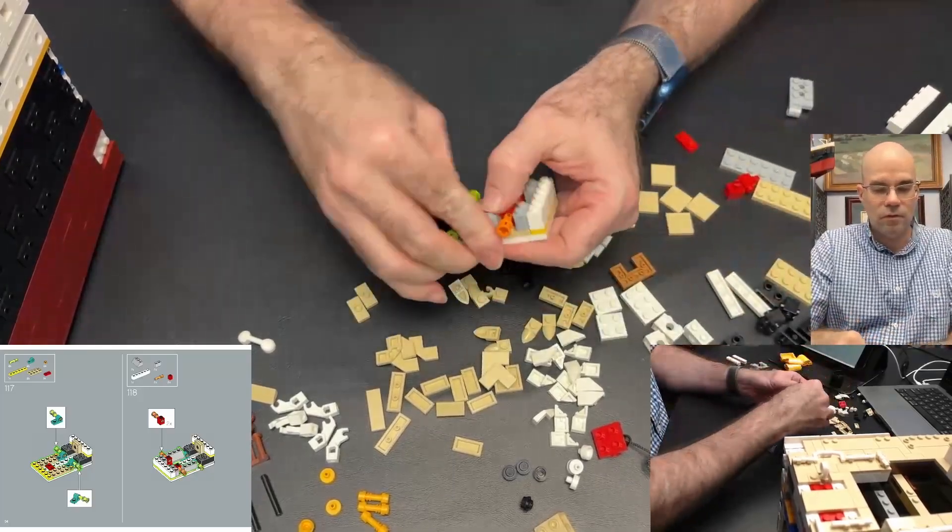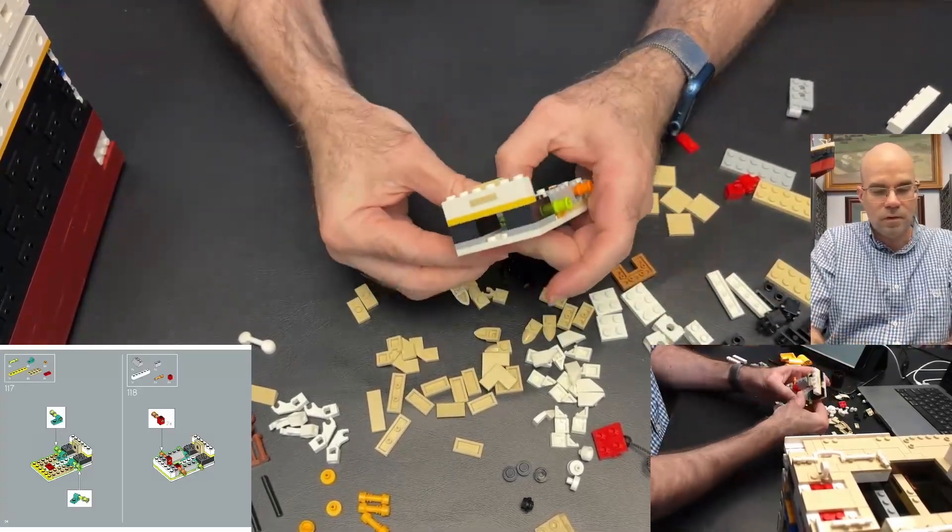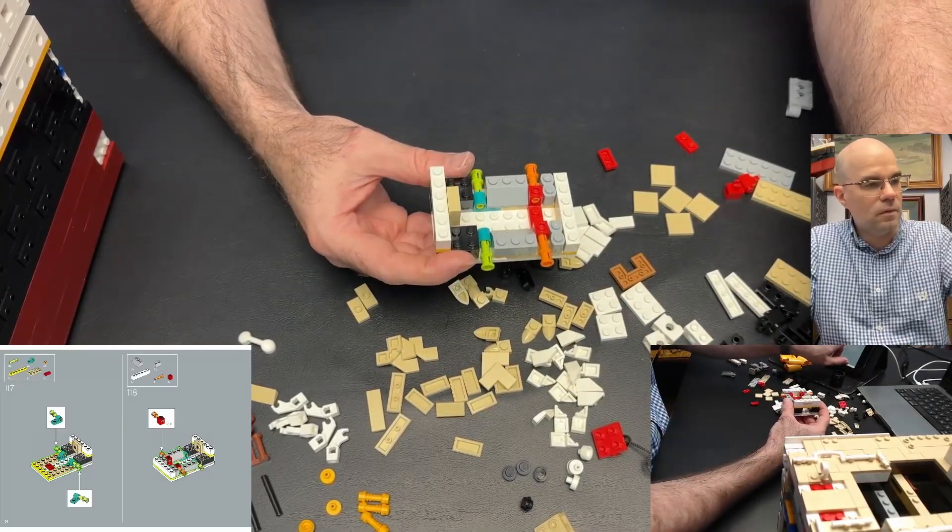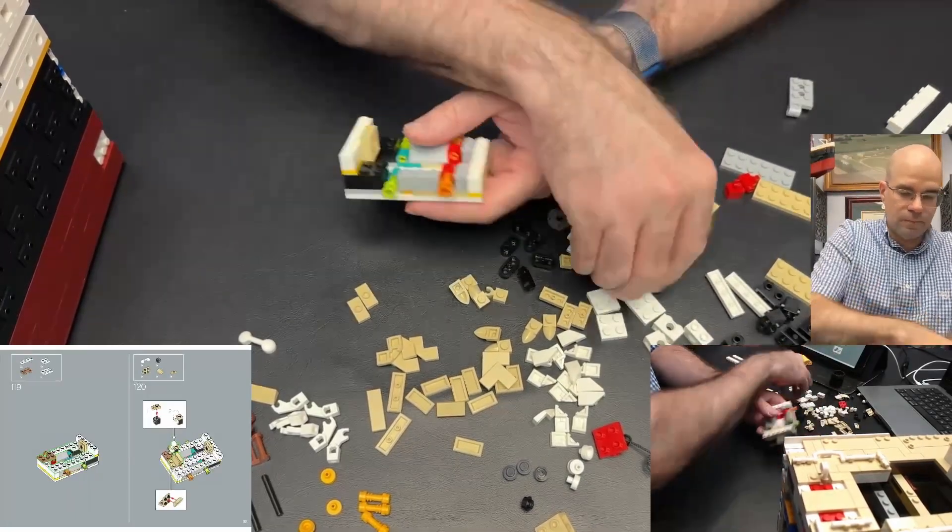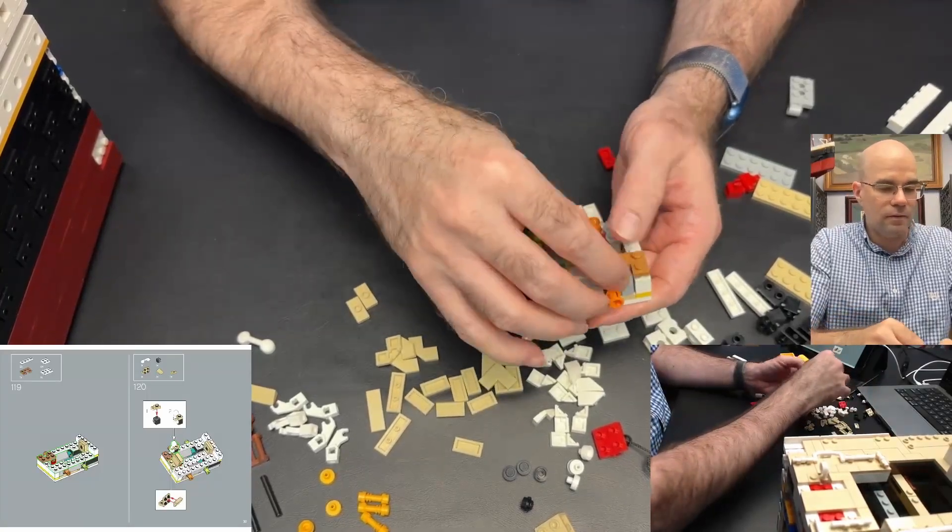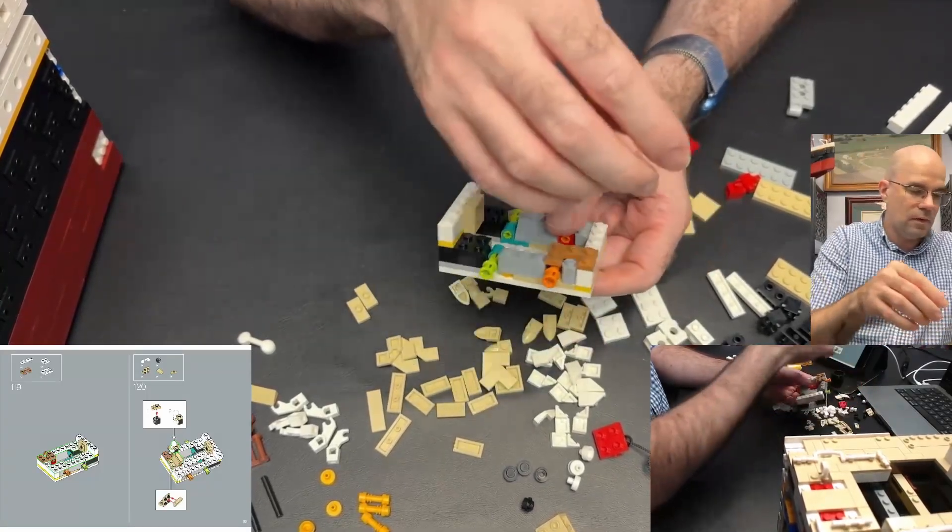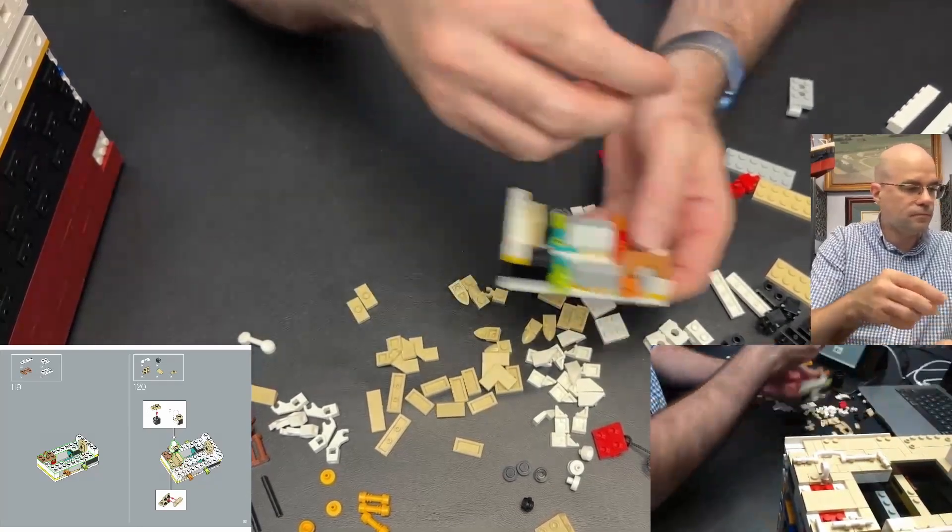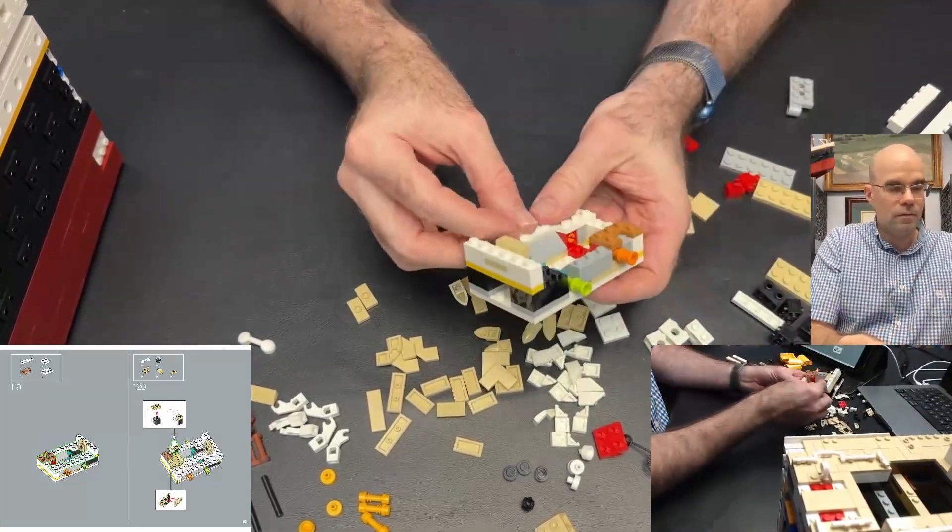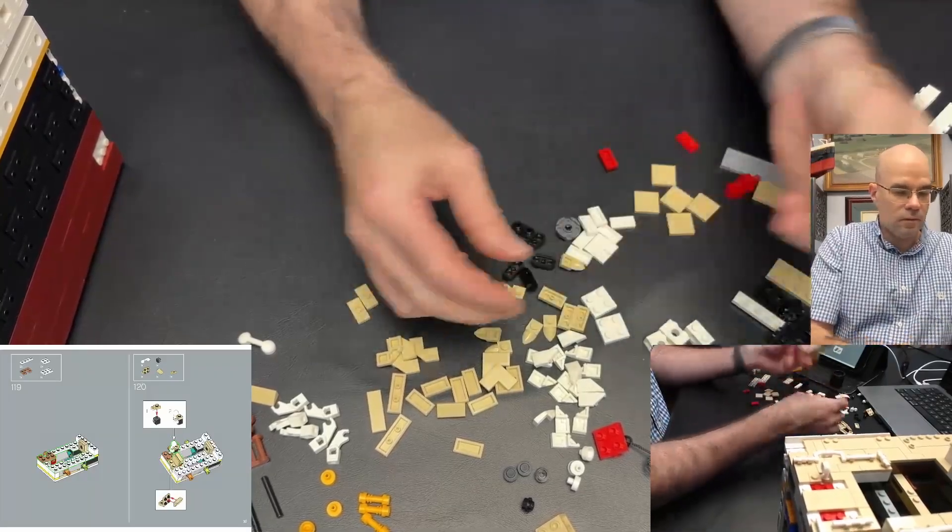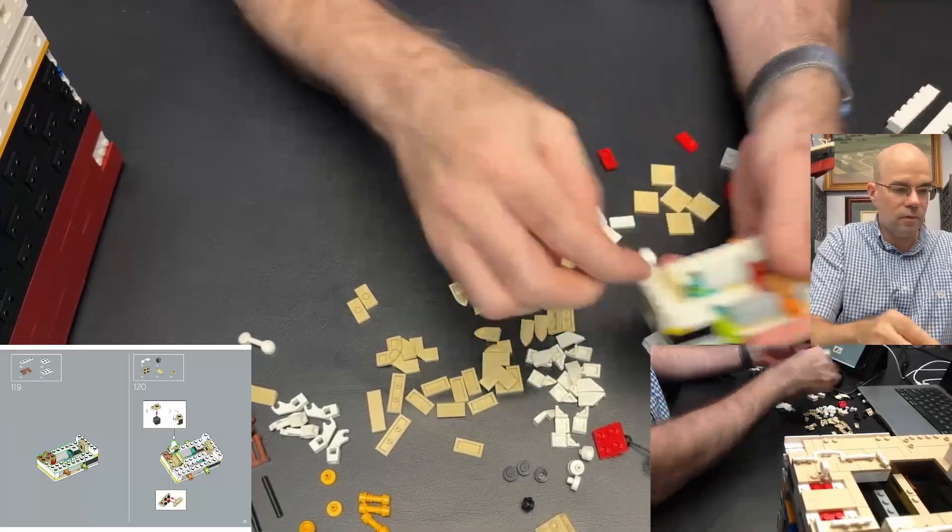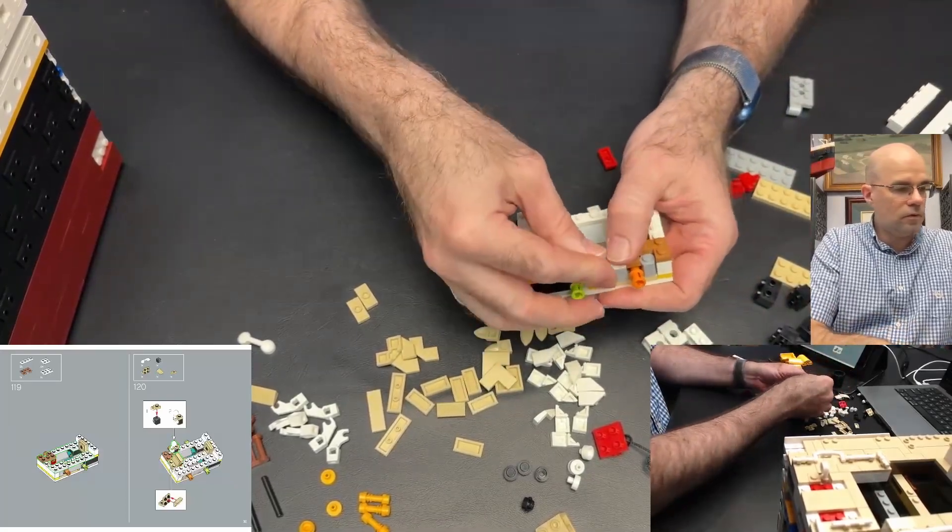And that palisade brick kind of ended up over there. And then these two, two by three slopes. I don't know why that is like that, but it is. And then that there. Plate there, plate there, plate there, another one by four there.